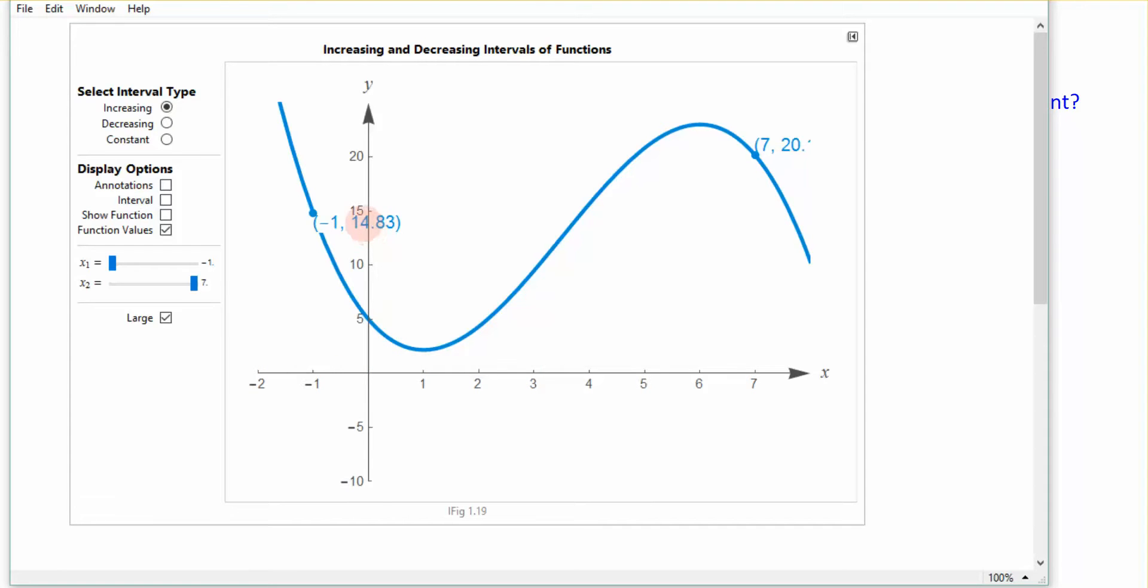So I want you to pay close attention to this y value in my ordered pair as I slide the point along. Here it's at 14, and I'm going to try to do this slowly. And now I went all the way to y being 5. So I'm going to go back just for a second.